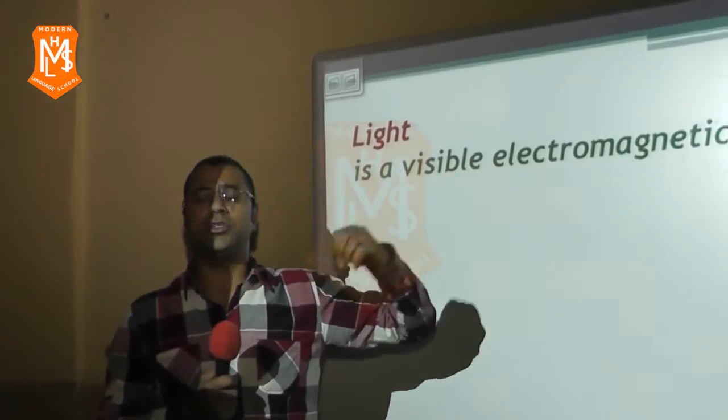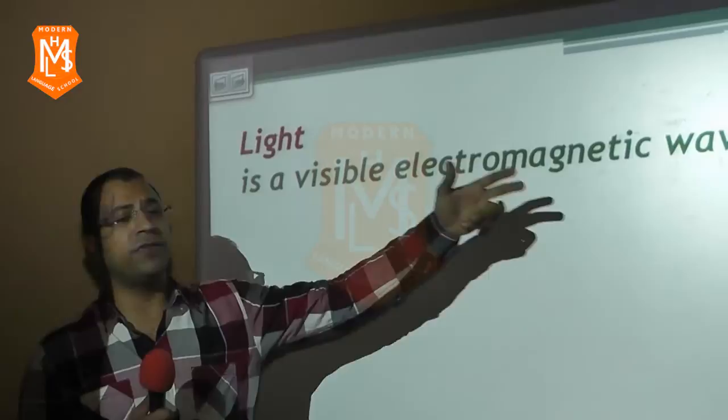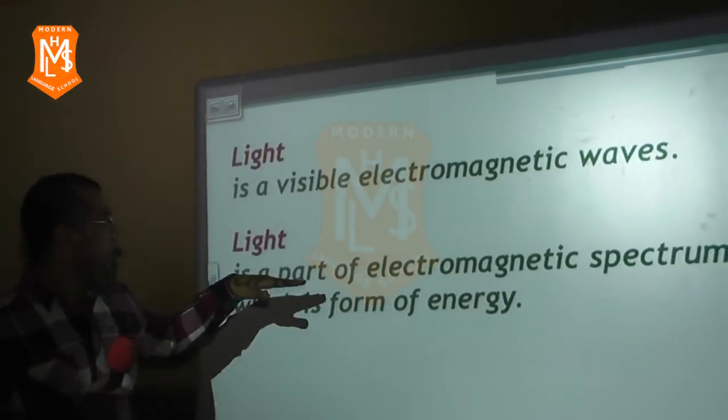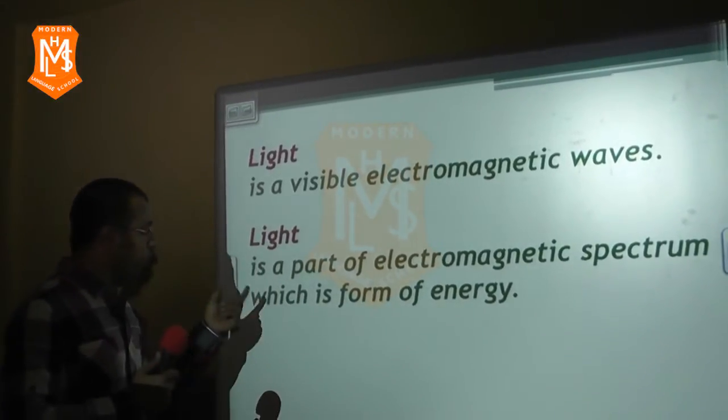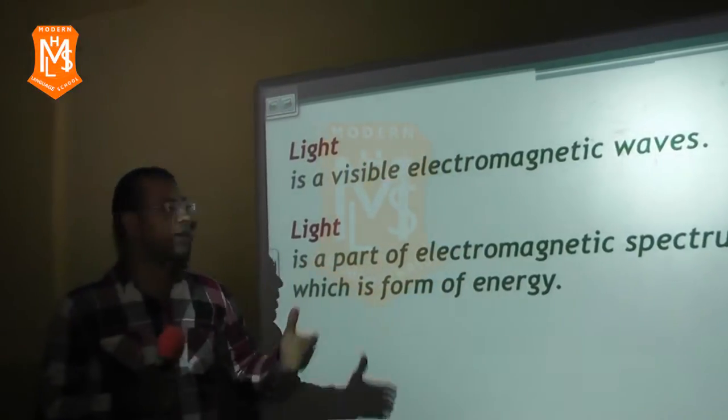Light is a visible part of electromagnetic waves. Second point: Light is a part of electromagnetic spectrum which is a form of energy. We can talk about light as a form of energy, light energy, like sound energy.